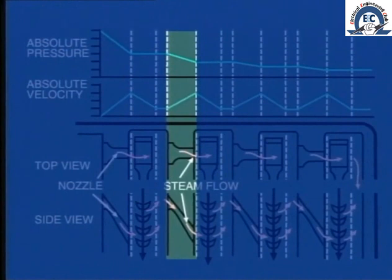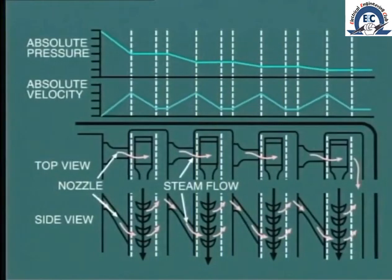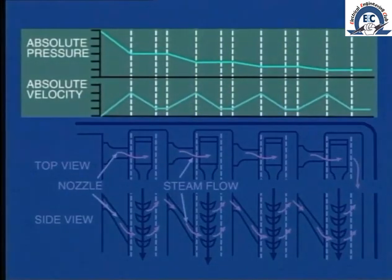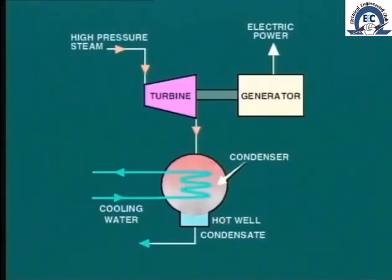Again, the pressure falls and the velocity increases due to expansion of the steam, and once again this is directed onto the next row of moving blades and so on. We can see that as a result of pressure drop, the velocity of the steam increases each time it passes through a set of stationary blades, but the velocity then decreases as the steam passes through the moving blades and gives up energy. Eventually, when the pressure has fallen to a low value, it can no longer expand and produce work and it is exhausted from the turbine.